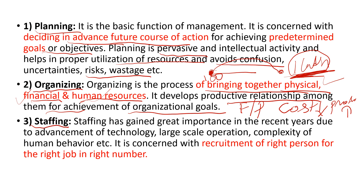The next one is staffing. Staffing is the third and very important function of management. Employing the right person in the right place is very essential. You have to consider the skill of the person and recruit them in the right position, which will help you achieve organizational goals with minimal cost in a short period. In recent years, there has been a lot of advancement in technology, large-scale operations, and complexity of human behavior, making it very essential to place human resources in the right job.